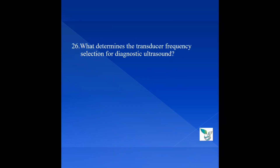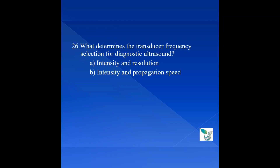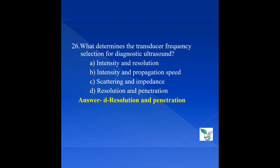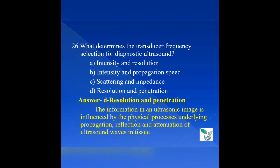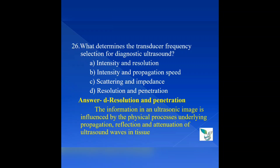Moving on to question number 26: What determines the transducer frequency selection for diagnostic ultrasound? Option A, intensity and propagation speed; option C, scattering and impedance; option D, resolution and penetration. The answer is option D — resolution and penetration. The transducer frequency selection depends upon both resolution and penetration. The information in an ultrasonic image is influenced by the physical process underlying propagation, reflection, and attenuation of the ultrasound waves in tissue.